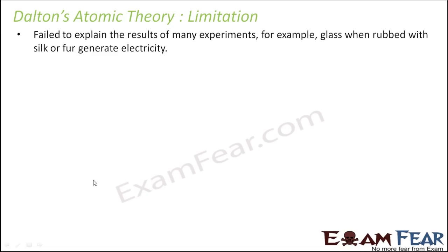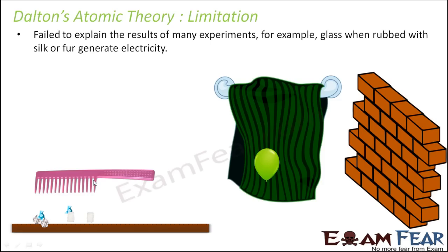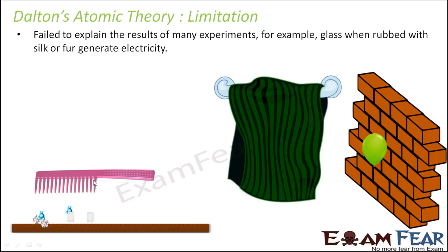But Dalton's theory had limitations. For example, it failed to explain the results of many experiments. Glass rubbed with silk or fur generated electricity — this was observed but Dalton's theory could not explain the reason. Similarly, rubbing a scale with fur or silk generates charge and you see paper dancing. Rubbing a balloon with a towel develops a charge on the balloon and it sticks to a wall — this also could not be explained by Dalton.